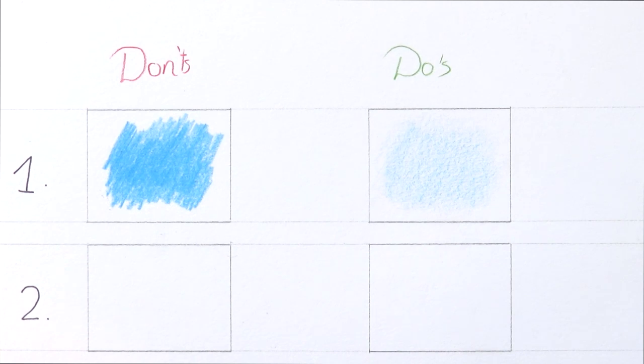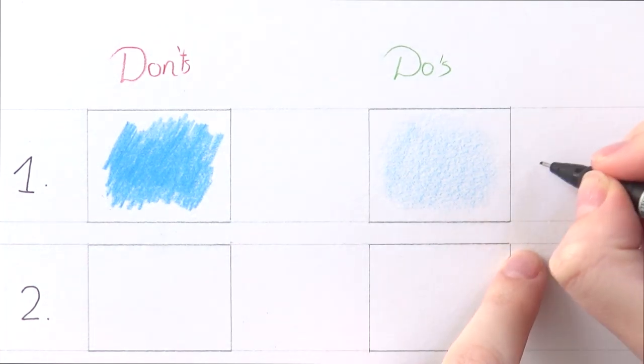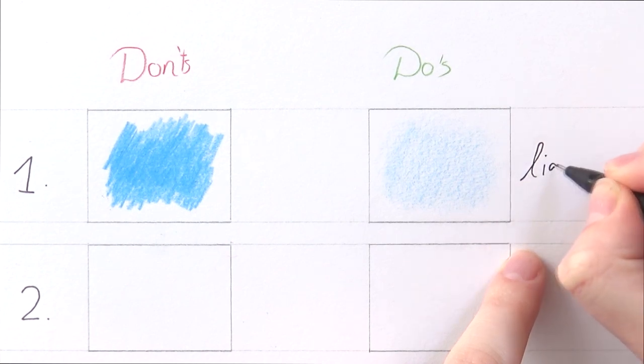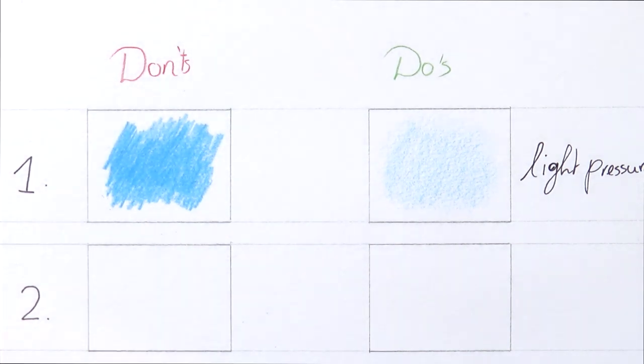So for realistic drawing start off very lightly. Use circular motions if you want to but make sure you can still see the grain of the paper. So that's the first do which is light pressure. Alright so that's the first one. Quite simple but very effective if you apply the layering technique well.